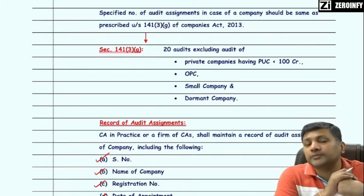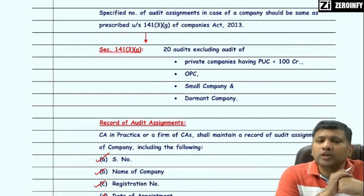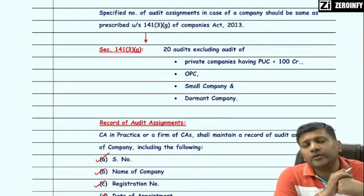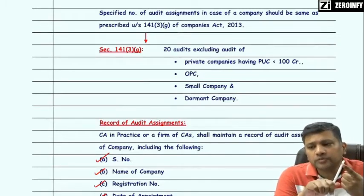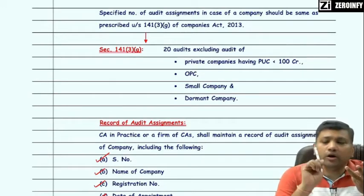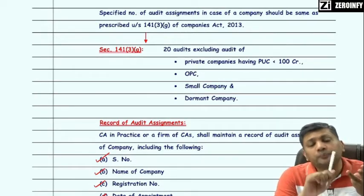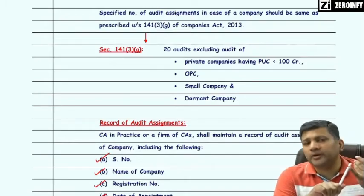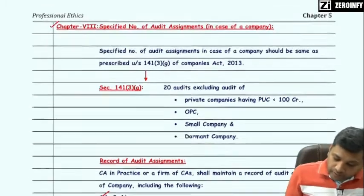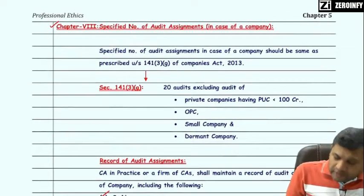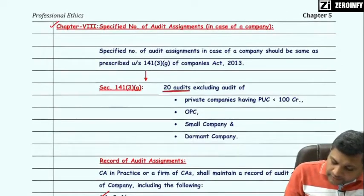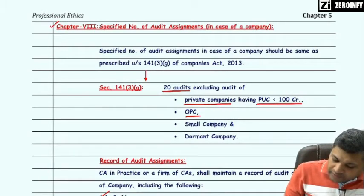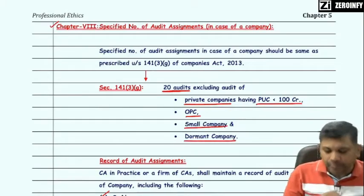As per Section 141(3)(g), the total number of company audits cannot exceed 20. However, in computing this number of 20, the audits of small companies, one-person companies, private companies having paid-up capital less than 100 crore, and dormant companies will not be considered.